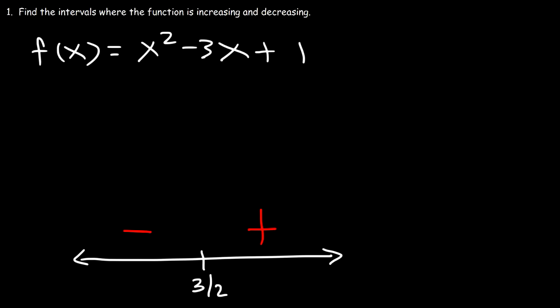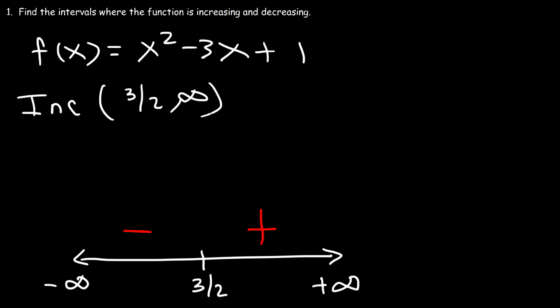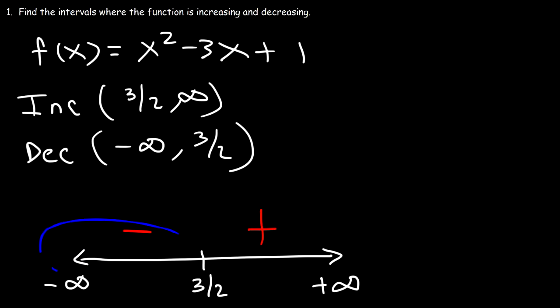With this information, we can write the intervals where the function is increasing and decreasing. To the right we have positive infinity and to the left negative infinity. The function is increasing between 3 over 2 and infinity, and it's decreasing between negative infinity and 3 over 2.